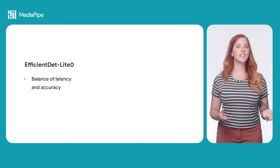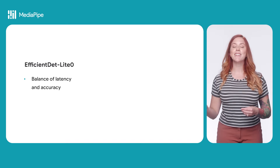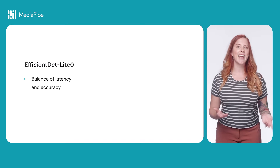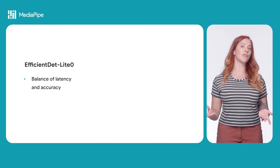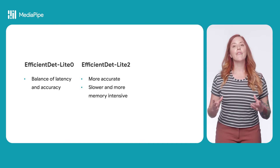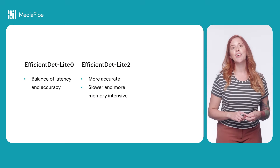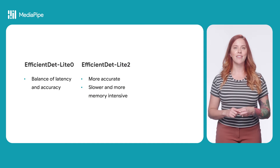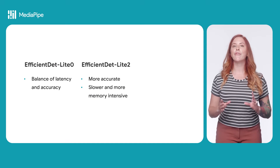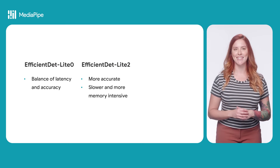The EfficientDetLite 0 model is recommended because it strikes a balance between latency and accuracy — it is both accurate and lightweight enough for many use cases. EfficientDetLite 2 is generally more accurate than EfficientDetLite 0, but is also slower and more memory intensive, making it appropriate for use cases where accuracy is a greater priority than speed and size.